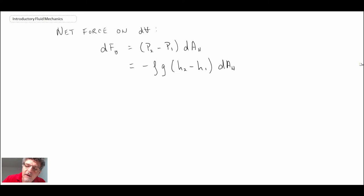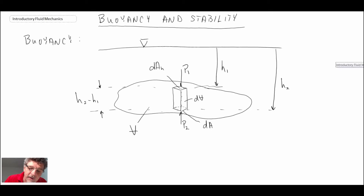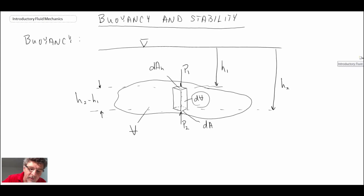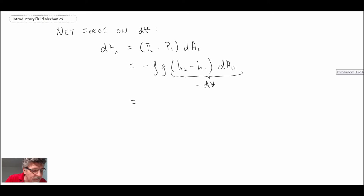Well, if we look at our object, we have H2 minus H1 times dAh. That's essentially equal to the volume of that differential element. So this here is nothing more than just dV. So we can rewrite this expression in the following way. Actually, that would be minus dV because we have H2 minus H1 and H2 is lower. So this is further down than H1. So we end up with rho G times dV.